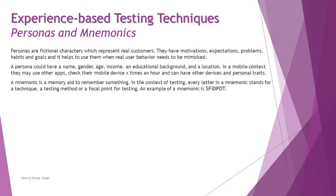Another technique is called mnemonics. Mnemonics is a memory aid to remember something — basically a short form of a bigger concept. For example, you might have heard of many acronyms. CMMI is one short term, and SAFE is another very popular term in agile today. SAFE stands for Scaled Agile Framework. So similarly, a mnemonic is a memory aid to remember a longer or bigger concept in short form.